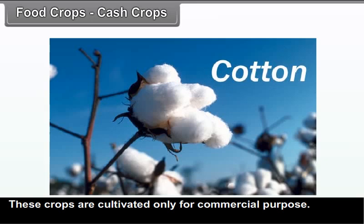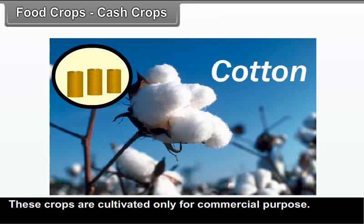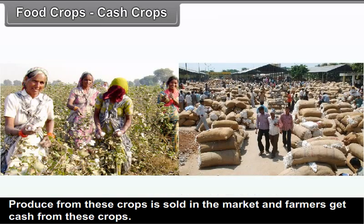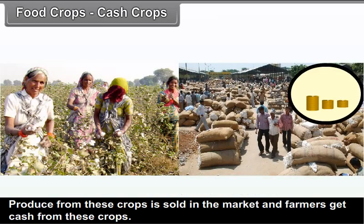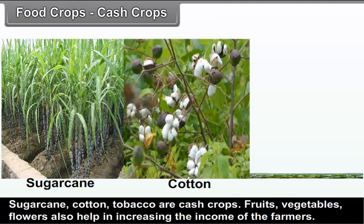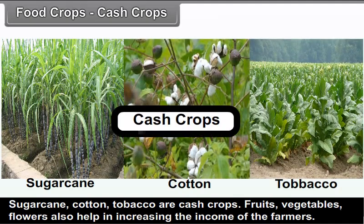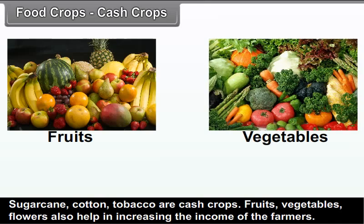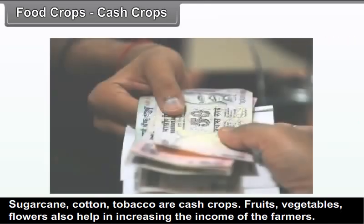Cash crops: These crops are cultivated only for commercial purposes. Produce from these crops is sold in the market and farmers get cash from them. Sugarcane, cotton, and tobacco are cash crops. Fruits, vegetables, and flowers also help in increasing the income of farmers.